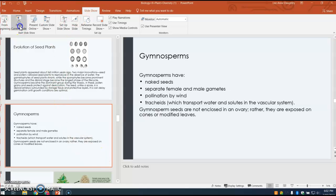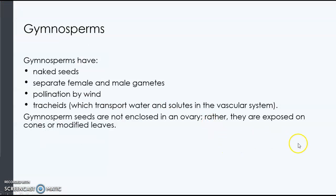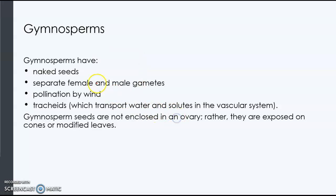Now we are talking about the gymnosperms, which are also vascular, but now we're getting into the plants that produce seeds. Gymnosperm actually means naked seed, and that means that the seed is not enclosed within a fruit — that's what naked seed actually means.